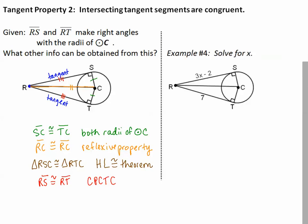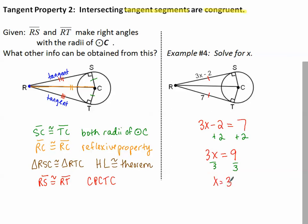Let's take a look at an example of how to use the fact that intersecting tangent segments are congruent. We identify in the picture that we have two tangent segments, so this side is congruent to this side. We set them equal and then solve. Tangent segments are congruent.